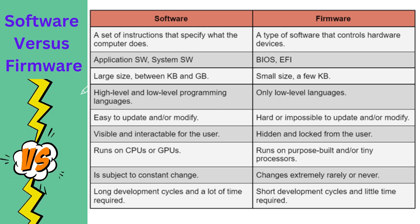A low-level language is a programming language that provides little or no abstraction of programming concepts and is very close to writing actual machine instructions. Two examples of low-level languages are assembly and machine code. Software is easy to update or modify — like the software updates we regularly do on our computers. Firmware, however, is hard or impossible to update; we never experience updating firmware the way we update software. Software is visible and interacts with users, but firmware is hidden and locked inside devices that we don't interact with directly. Software runs on CPUs, whereas firmware runs on purpose-built tiny processors.